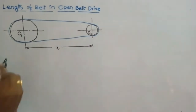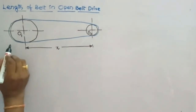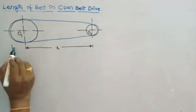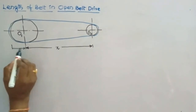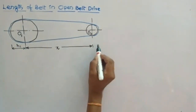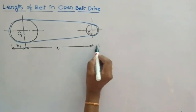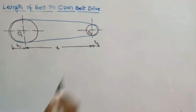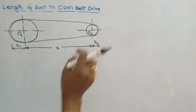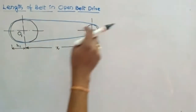The diameter of the driving pulley is denoted as D1, hence the radius is R1, and the radius of the driven pulley is R2. The belt is placed over the driving and driven pulleys, and we need to find the length of this belt.